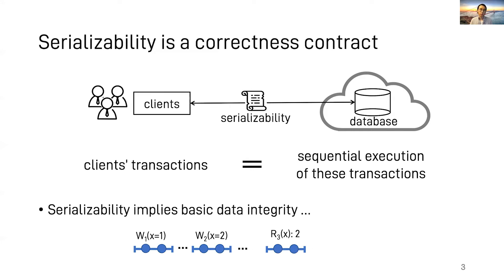As a generic correctness contract, serializability covers basic data integrity. For example, if a read reads a tampered value that is not from any write, this is a serializability violation.